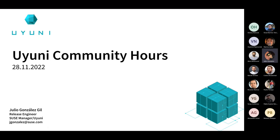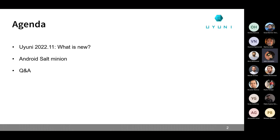Welcome everyone to this November edition of the Uyuni Community Hours. For today's agenda, I'm going to briefly present what is new in Uyuni 2022-11, which was released on Monday or Tuesday. Then Oscar will present his findings about having Android systems as salt minions. And as always, we will have some time for questions, ideas, or things you want to discuss outside the regular agenda. Let's get started.